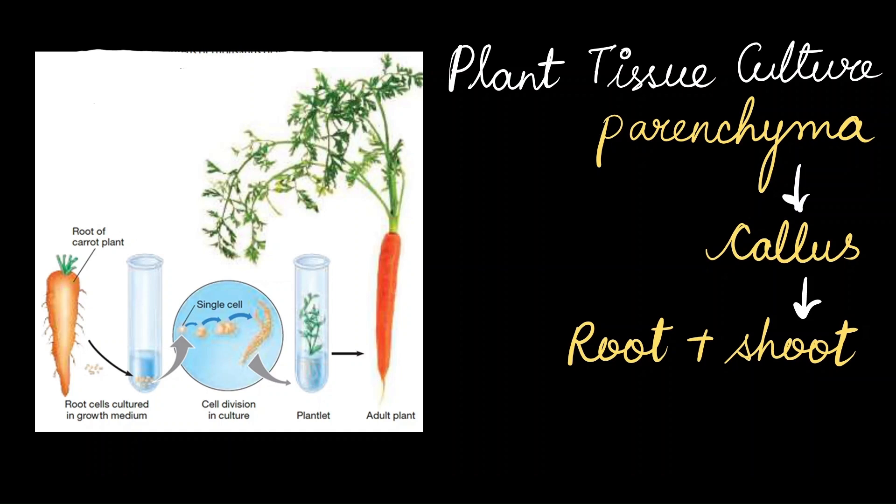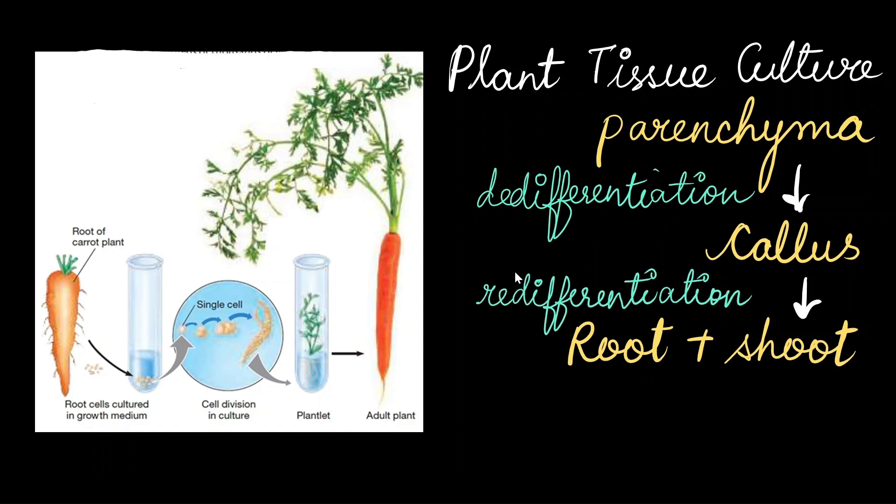So let's look at what is happening. Parenchyma, which is a differentiated ground tissue cell, now has to become a group of undifferentiated cells. So basically, it's losing its function. So it undergoes de-differentiation. And undifferentiated cells are again regaining function. So here it is re-differentiation.